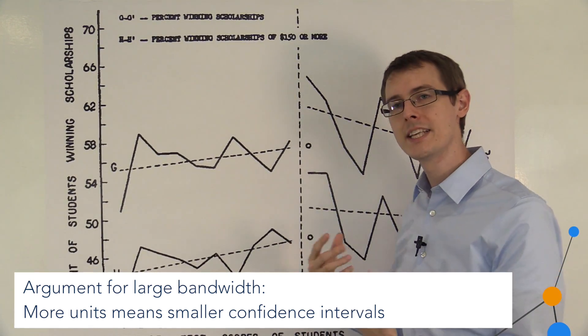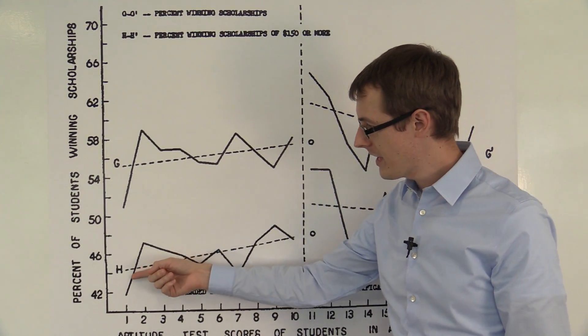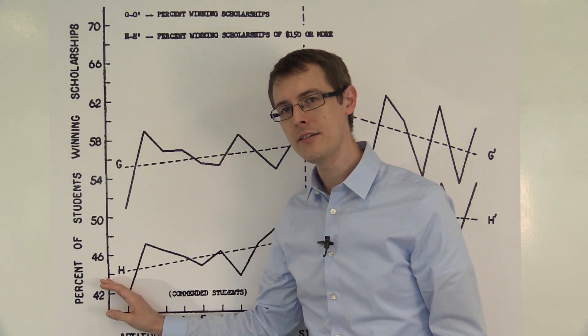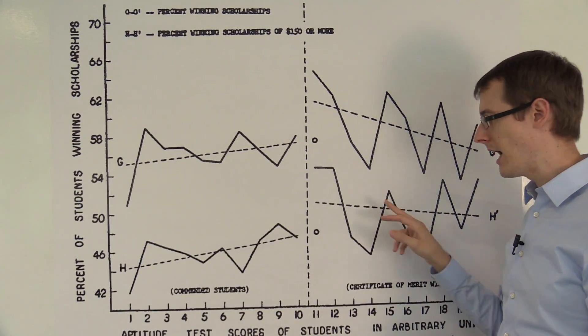So that's one thing you could do. That's the most natural thing. Now another thing you could do, which is what Thistle-Wayton Campbell have, is you do a regression on the left-hand side. That's what this dotted line is here. Then you do a regression on the right-hand side.